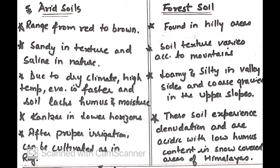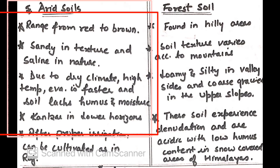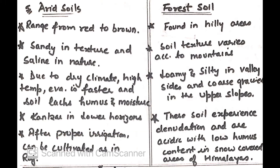Arid soils range from red to brown, sandy in texture and saline in nature. Due to dry climate and high temperature, evaporation is faster and the soil lacks humus and moisture. Kankar in lower horizons can be seen. After proper irrigation, this soil can be used for cultivation purposes.